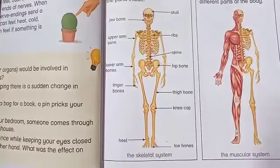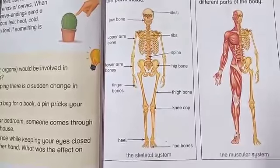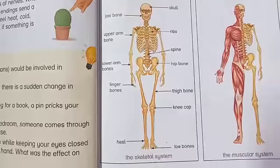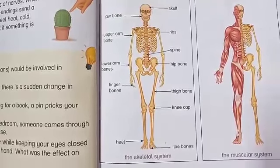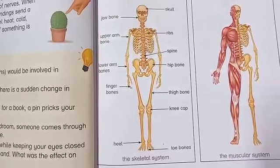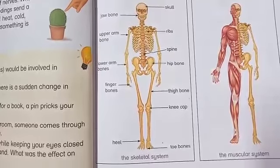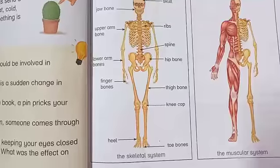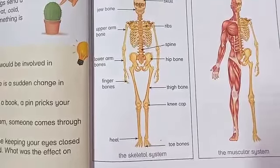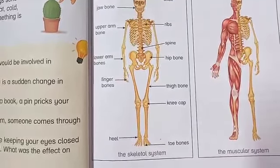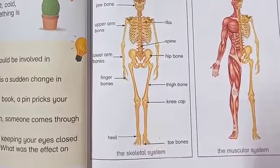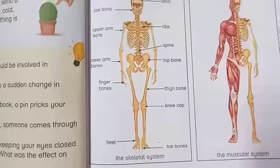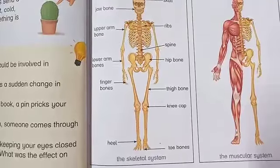Here in the diagram you can see the skeletal system: the skull that protects the brain, jaw bones that keep the teeth in place, arm bones that are used for movement, the spine that helps to keep us straight and upright, and all of the toe bones. All these bones are involved in different movements.